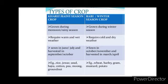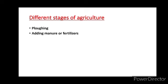Next, we are going to learn about the different stages of agriculture. To raise a healthy crop, farmers have to work hard every day through various stages of agriculture. The different stages of agriculture are ploughing, adding manure or fertilizers, sowing, irrigation, harvesting, and storage. Now let us learn about these stages one by one.